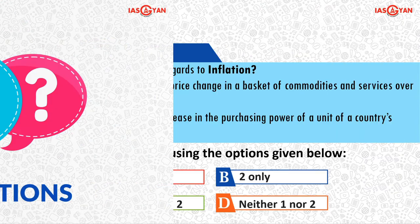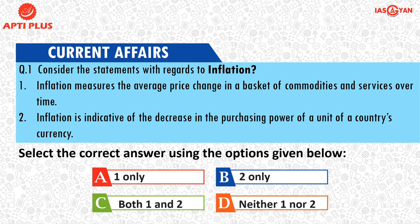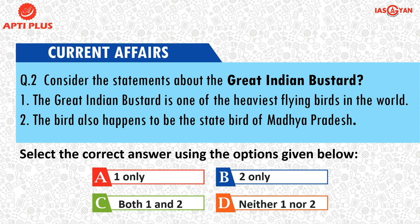Now for the MCQ questions of the day. First question is about inflation: consider the statements — inflation measures the average price in a basket of commodities and services over time, and inflation is indicative of a decrease in the purchasing power of the unit of country currency. Which among the following is the correct option? Choose among A, B, C, D and write in the comment section. Second question: consider the following statements about the Great Indian Bustard — it is one of the heaviest flying birds in the world, and it is the state bird of Madhya Pradesh. Mark the correct option and participate in the question-answer series.